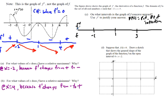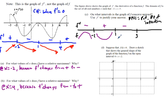Looking at the sign of the slope of f': between negative 3 and negative 1, the slope is going downward — negative — so f is concave down (frowny face). Between negative 1 and 1, the slope of f' is increasing — positive — so f is concave up (smiley face). Between 1 and 3, the slope of f' is going downward — negative — so f is concave down. To the right of 3, the slope of f' is positive, so f has upward concavity from 3 to 5.